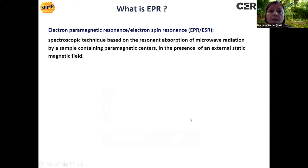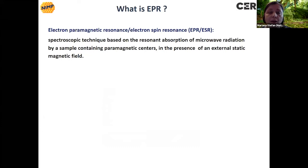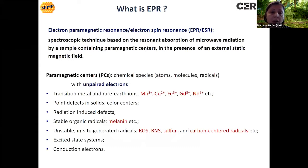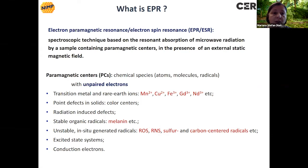Electron paramagnetic resonance, or electron spin resonance, is a spectroscopic technique based on the resonant absorption of microwave radiation by a sample containing paramagnetic centers in the presence of an external static magnetic field. The paramagnetic centers are chemical species with unpaired electrons, such as transition metal and rare earth ions, point defects in semiconductors or color centers, radiation-induced defects, stable organic radicals such as melanin, unstable in-situ generated radicals such as reactive oxygen or nitrogen species, excited-state systems, or conduction electrons.